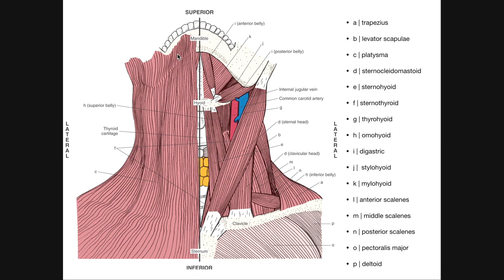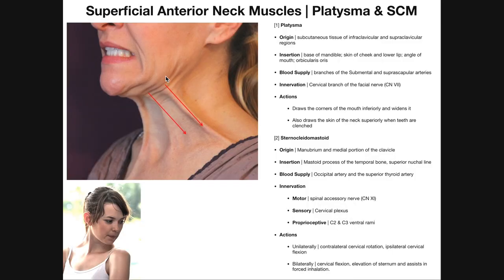When the platysma contracts, it pulls the insertion toward the origin. The musculature in the neck tenses and pulls the skin downward, giving an expression of fear or surprise. We consider this a muscle of facial expression — it draws the corners of the mouth inferiorly and widens it, since part of the insertion is on the corners of the mouth and the orbicularis oris.